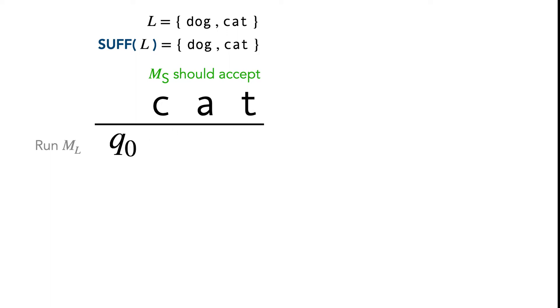We know we start off at q_0. Then we read the character c and we end up at some other state. We're just making up these state names as we go for visualization purposes. We read c, we end up at some state. We read a, we end up at another state. We read t, we end up at this final state. And we know that this final state has to be an accepting state because cat is also in L.